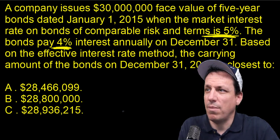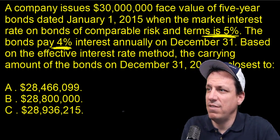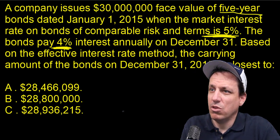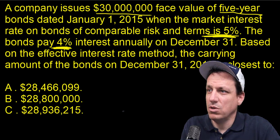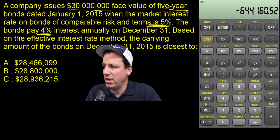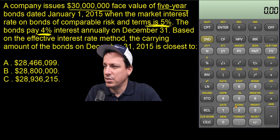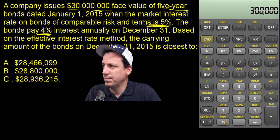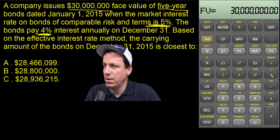Let's put this in the problem. It's a five-year bond, $30 million, paid at the end of the year. Clear everything out of our time value of money calculator and let's put in the numbers. $30 million is our future value.